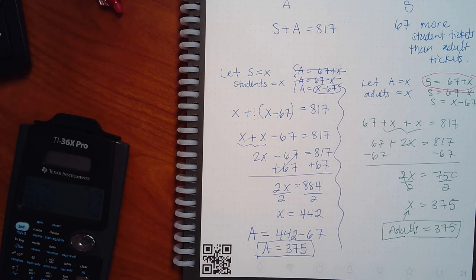Always go back to the problem statements and figure out who is supposed to have more and who is supposed to have less. That will help you choose which expression is correct. It's not easy — you have to sit and think about it for a bit before moving forward.